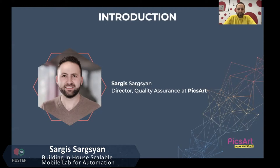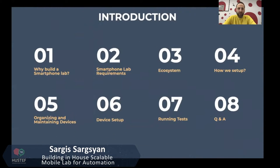Let's start the discussion about the device lab. Today we'll talk about why we actually built a smartphone lab, what the requirements are, and the ecosystem we created for mobile automation. We'll cover how we set up, organize, and maintain the devices, how we configure devices for automation runs, and how the tests are actually running. At the end, we'll have time for questions and answers.